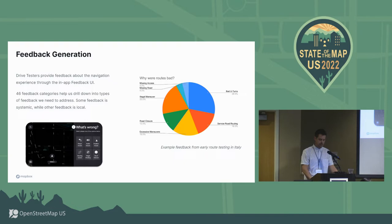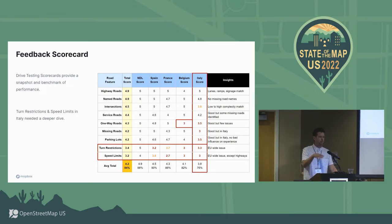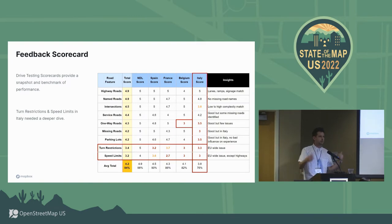Here's an example of a scorecard we might create after one such test. On the two axes we have road features that drivers have reported issues with, scored out of five, and a comparison city by city — Netherlands, Spain, France, Belgium, and Italy. They're all in Europe but might have different issues to pay attention to. In this case, Italy clearly had some things we needed to address, and the two largest contributors were turn restrictions and speed limits.